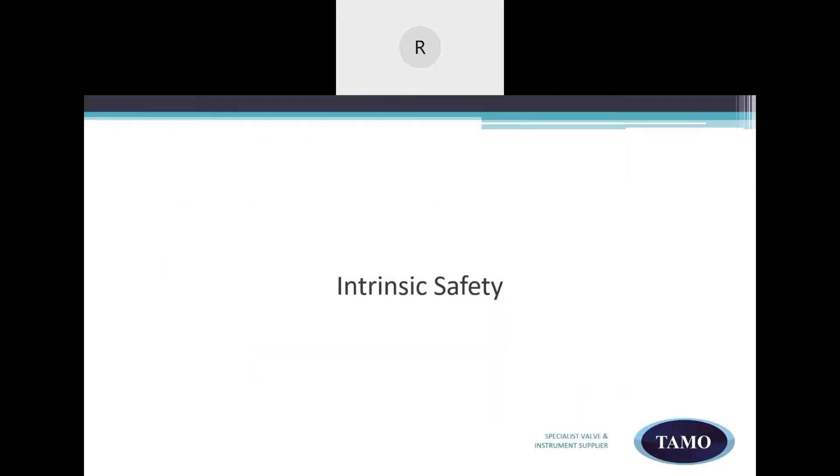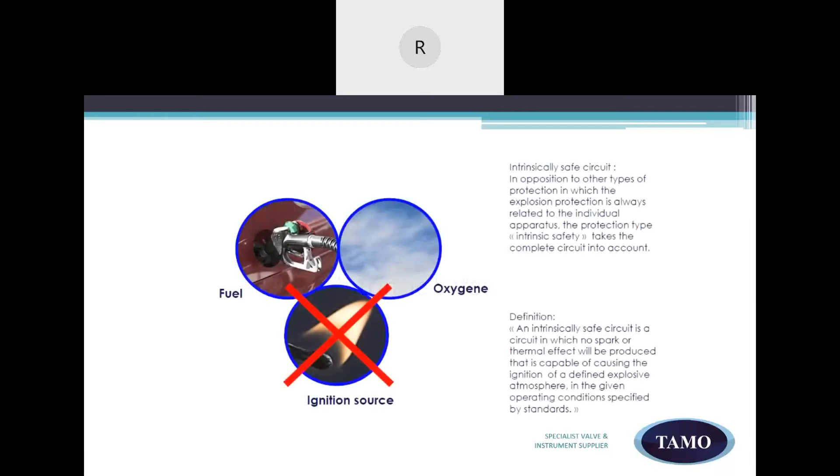Let's touch on intrinsic safety. An explosion requires fuel, oxygen and a source of ignition. Intrinsic safety removes the source of ignition. Let's look at the intrinsic safety protection technique and the definition of intrinsic safety. An intrinsically safe circuit is a circuit in which no spark or thermal effect will be produced that is capable of causing the ignition of a defined explosive atmosphere in the given operating conditions specified by standards. An intrinsically safe circuit, in opposition to other types of protection in which the explosion protection is always related to the individual apparatus, the protection type intrinsic safety takes the complete circuit into account.